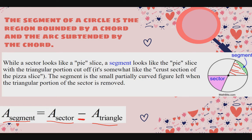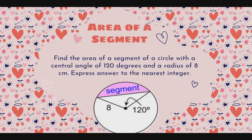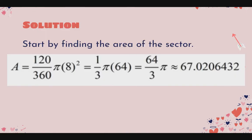Sample problem: Find the area of a segment of a circle with a central angle of 120 degrees and a radius of 8 cm. Express the answer to the nearest integer. Start by finding the area of the sector using N over 360 × pi × r squared, where N = 120. Simplifying 120 over 360 gives 1 third. And r squared = 8 squared = 64. So we have (1/3) × pi × 64, which is 64 over 3 times pi, approximately 67.0206432.